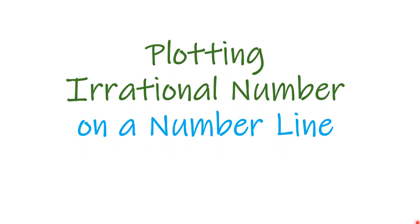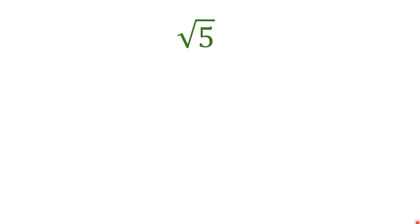In this video, we're going to talk about plotting irrational numbers on a number line. For example, we have this number — the square root of 5. Square root means looking for a number that, if you square it or multiply it by itself, you will get the number inside that radical symbol.